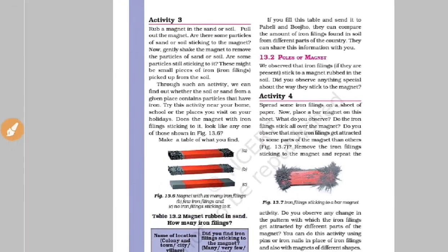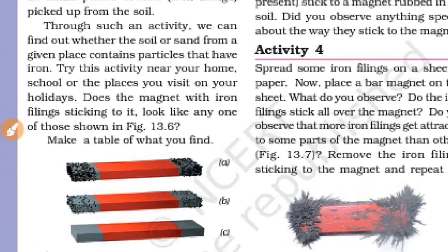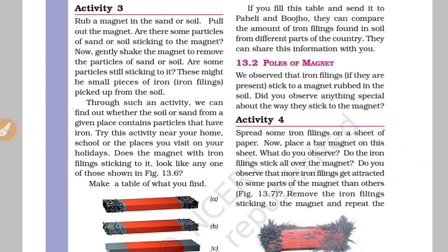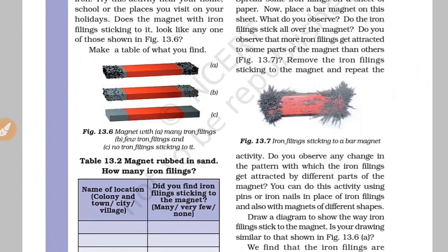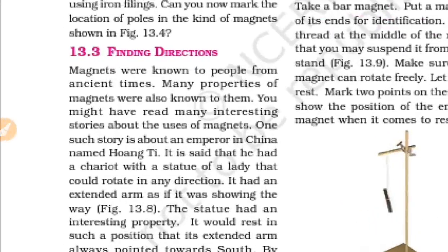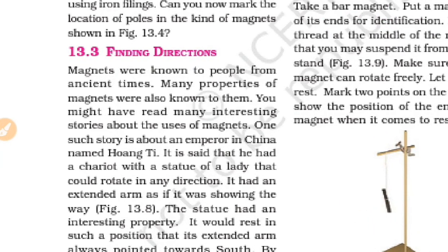Next, the poles of a magnet. The magnet has two poles: one is the North Pole and the other is the South Pole. So the magnet always has two poles — North Pole and South Pole.